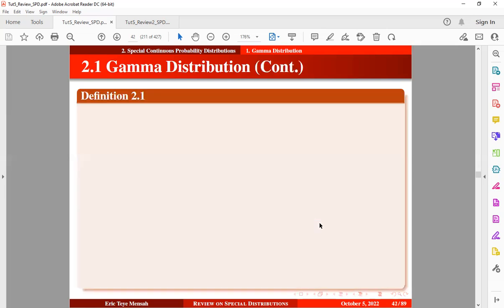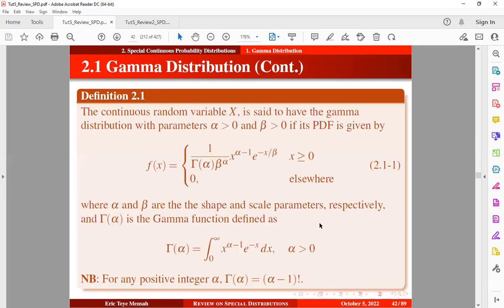So let's take a look at the definition for gamma distribution. The continuous random variable X is said to have the gamma distribution with parameters alpha and beta if its PDF is given by equation 2.1.1. So in this equation, we have alpha to be the shape parameter and we have beta to be the scale parameter.